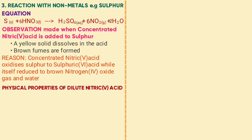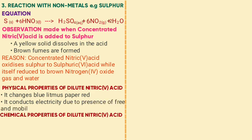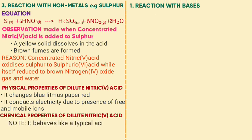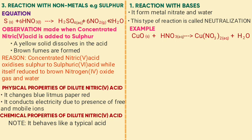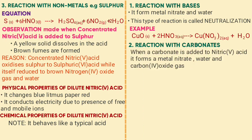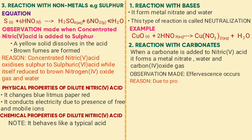The physical properties of dilute nitric acid include: it turns blue litmus red and it conducts electricity due to the presence of free and mobile ions. Chemical properties of dilute nitric acid: it behaves like a typical acid. Reaction with bases — it forms a metal nitrate and water in a neutralization reaction. Example: copper(II) oxide plus nitric acid gives copper nitrate plus water. Reaction with carbonates — when a carbonate is added to nitric acid, it forms a metal nitrate, water, and carbon dioxide. The observation is effervescence of gas due to production of carbon dioxide.